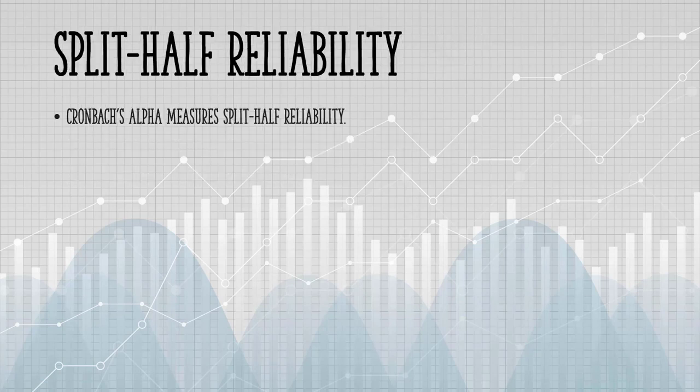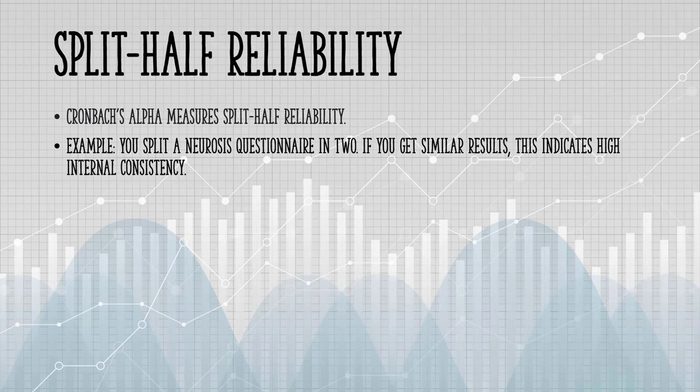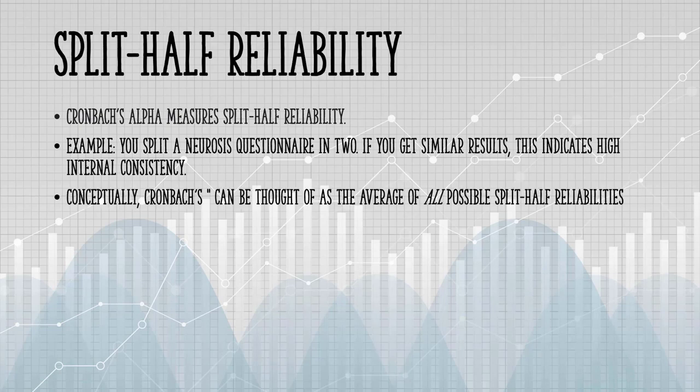Alpha measures split-half reliability. As an example, you might design a questionnaire to measure neurosis. You split the questionnaire in two. If you get similar results, this indicates high internal consistency. There are many ways you could split half a test. For example, you could split it by odd and even numbers or right down the middle. Conceptually, Cronbach's can be thought of as the average of all possible split-half reliabilities.